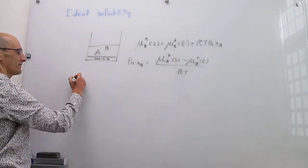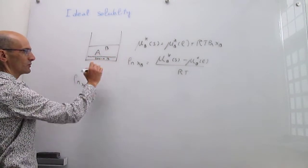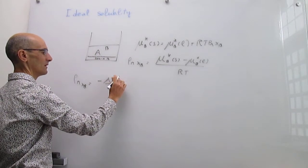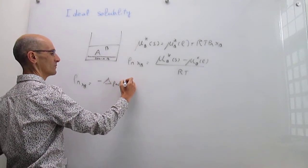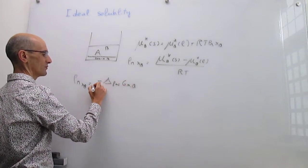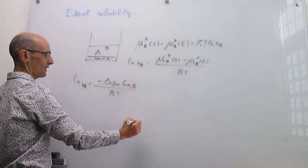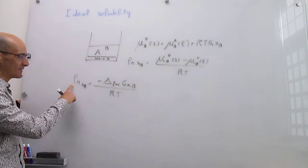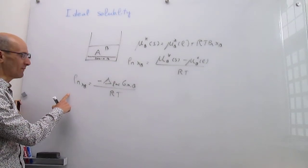We can write this as: the natural log of the mole fraction of B in solution equals the negative change in Gibbs energy of fusion for solute B — the molar Gibbs energy of B in fusion, going from solid to liquid — divided by RT. Our thermodynamic analysis then requires us to examine the first derivatives of this expression with respect to temperature, because we want to see how the solubility changes with temperature.